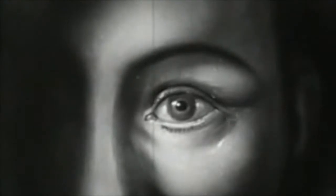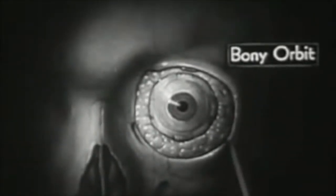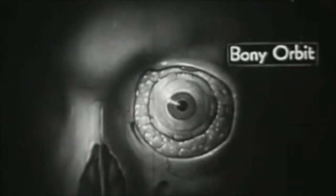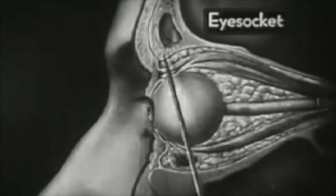Nature has also provided ample protection for this very delicate organ. With the outer coverings removed, we see the eyeball completely surrounded by a layer of soft fatty tissue and placed within the bony orbit where it lies protected against sudden jolts. Seen from the side, the protected position of the eyeball within its funnel-shaped eye socket is shown still more clearly.